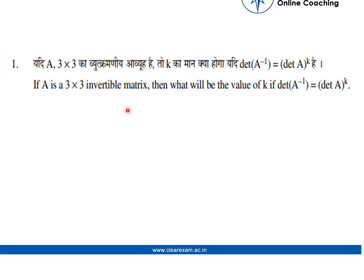We know that determinant of A inverse is nothing but 1 by determinant of A. So it can be seen easily that the value of k is equal to minus 1.